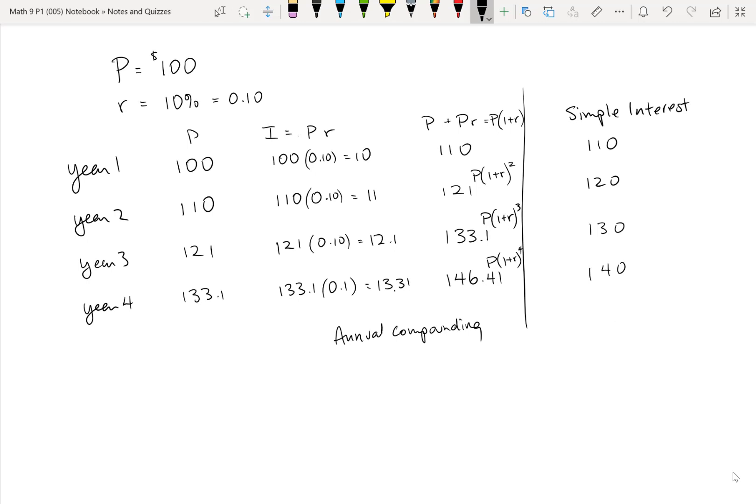And we could have gotten directly to that value, 146.41, just by saying, well, the accumulated amount is the principal that we started with, 100 times 1 plus the rate, which was 0.10 to the power of 4. And when you punch this into your calculator, make sure you do what's in the brackets first. So the 1 plus 0.1. You can do that in your head, obviously. It's just 1.1. Raise that to the power of 4, and then multiply the result by 100. You should get $146.41.